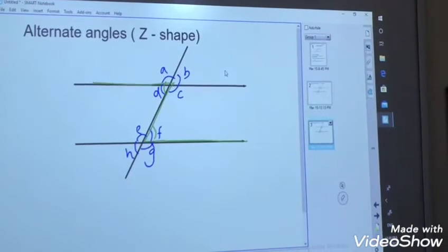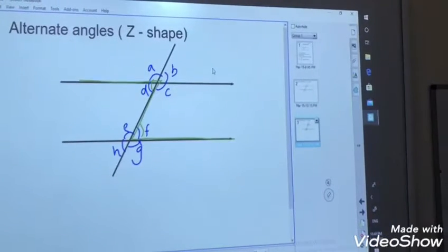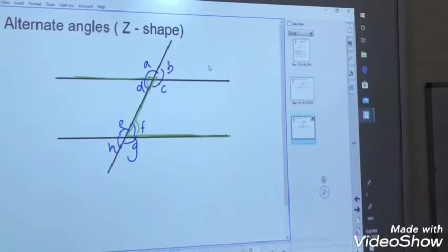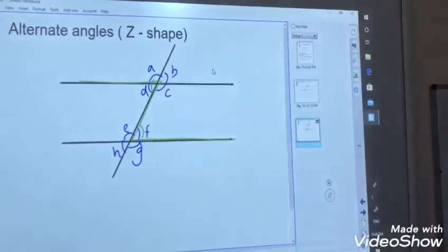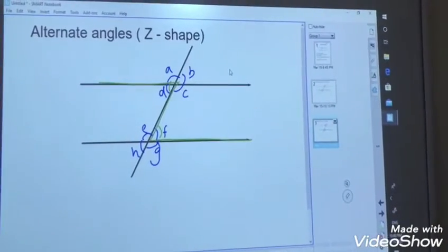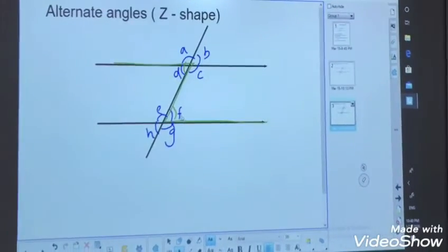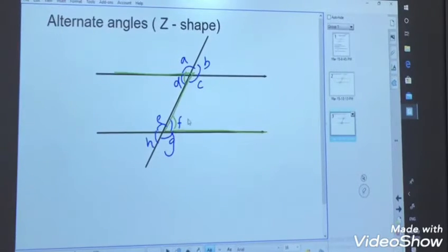Then the other two pairs of angles are the alternate angles. How the alternate angles we can find it? It makes Z in shape, okay? So look at here. The angle D and F. It is in the shape of Z. Angle D and the angle F both are alternate angles. These two are equal to each other.